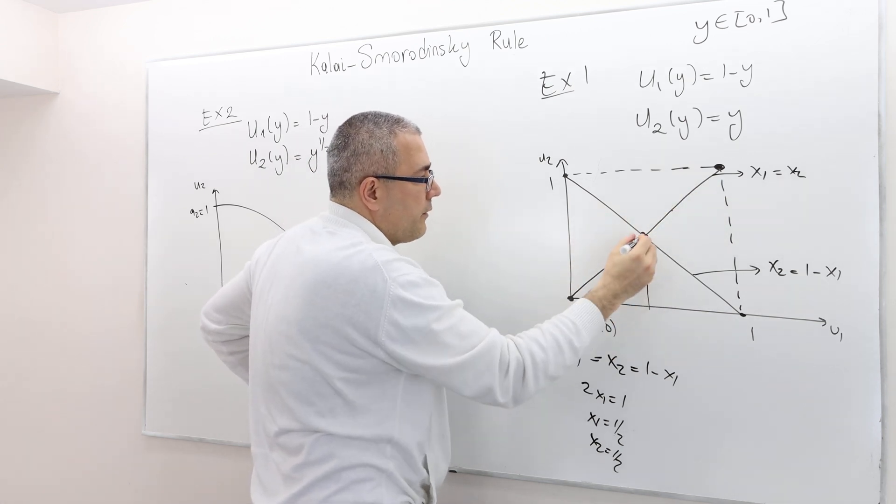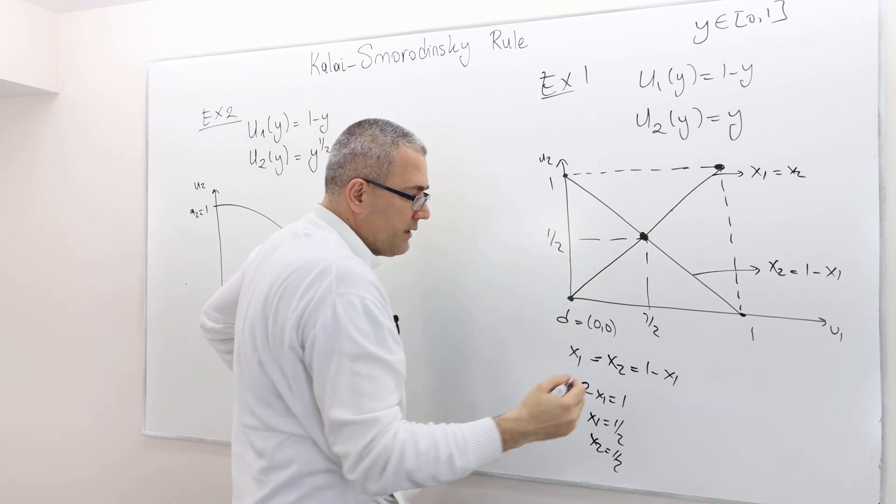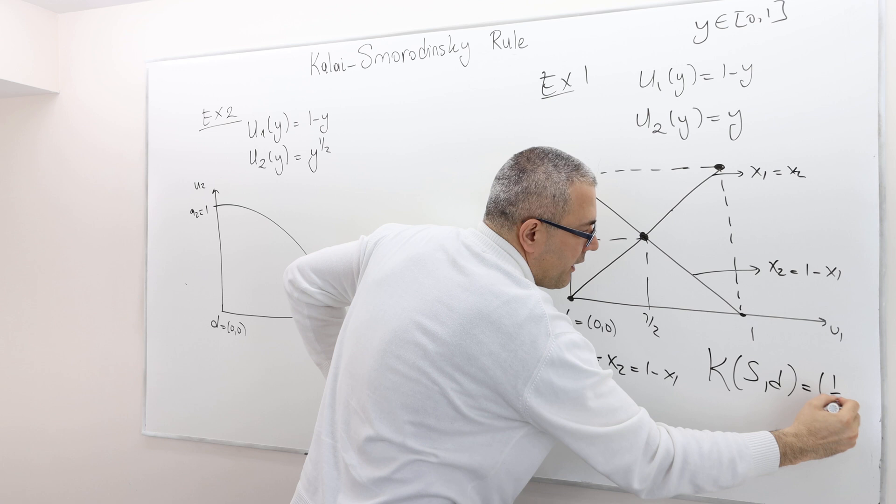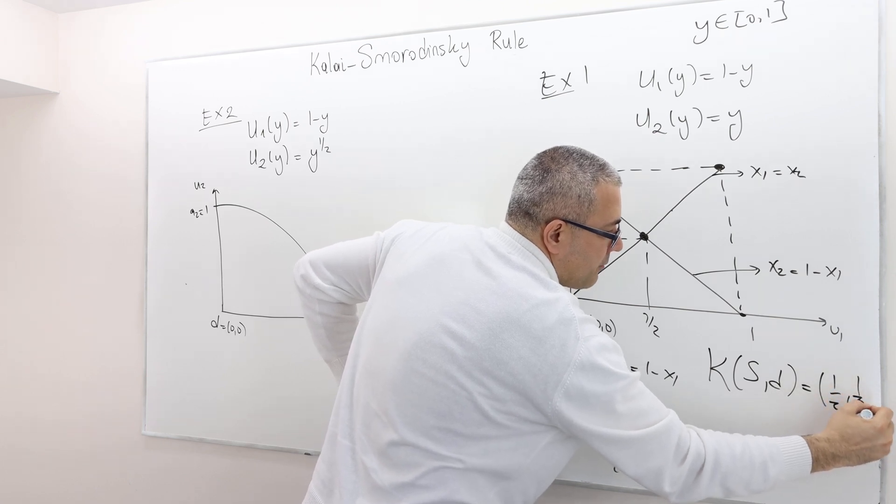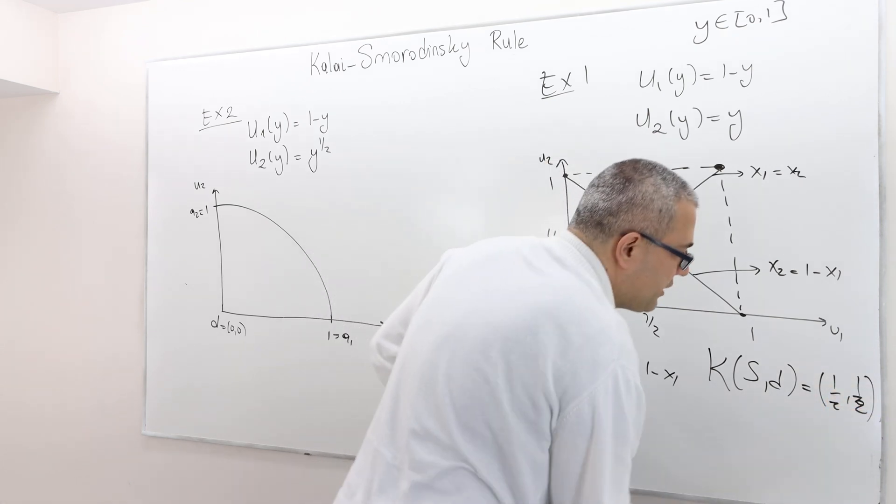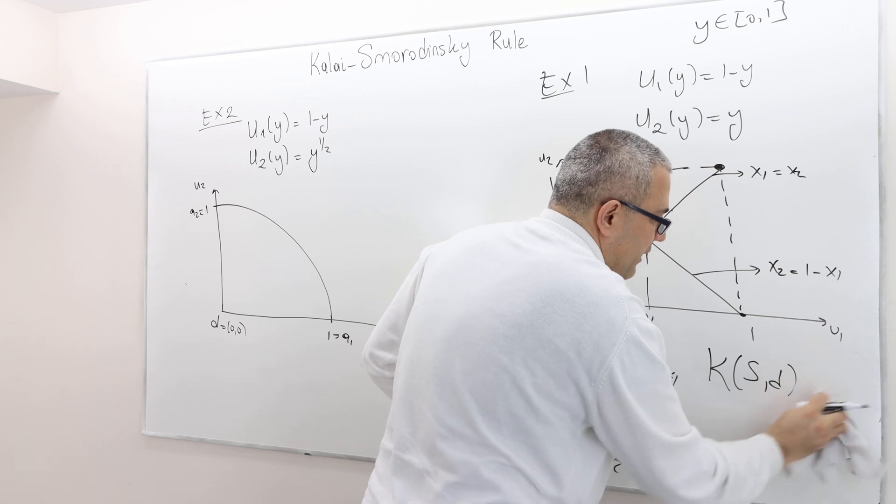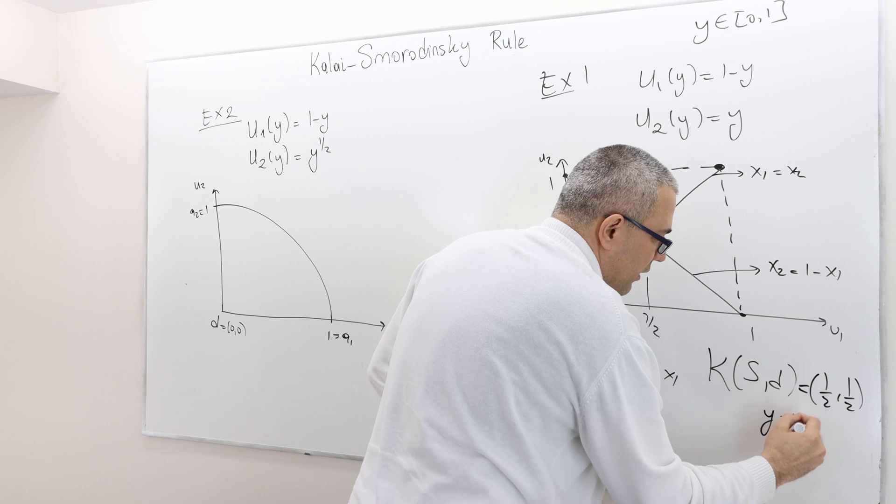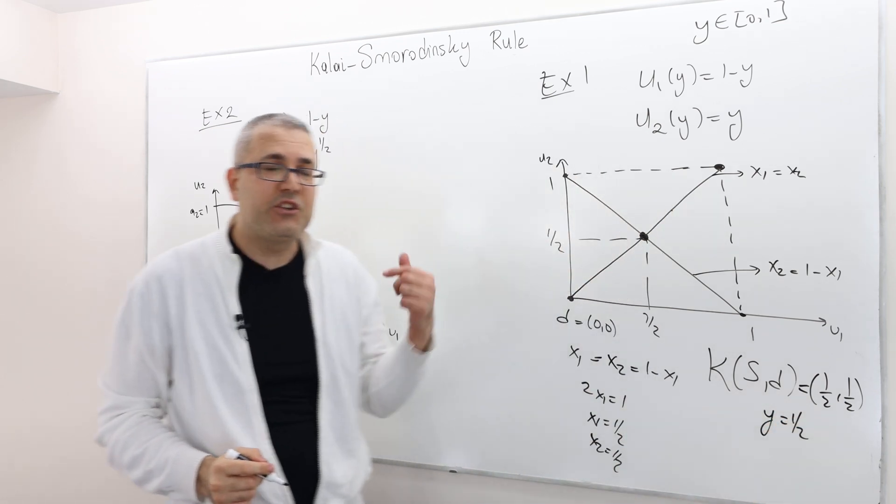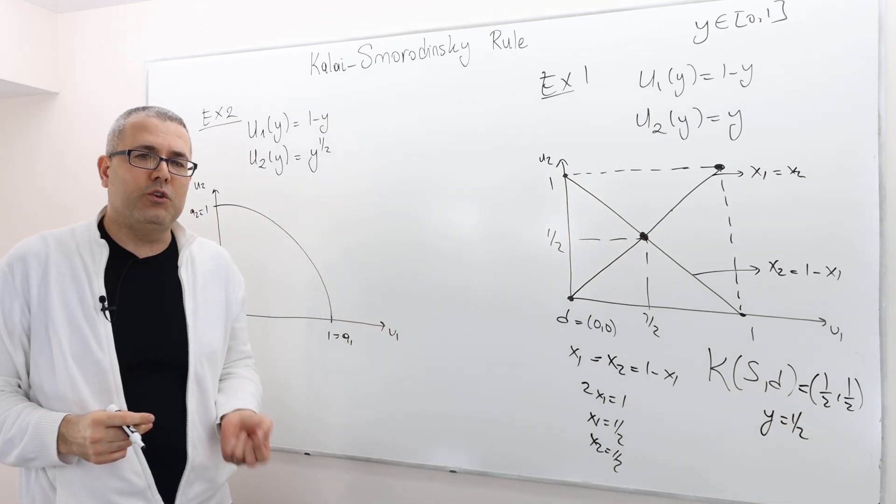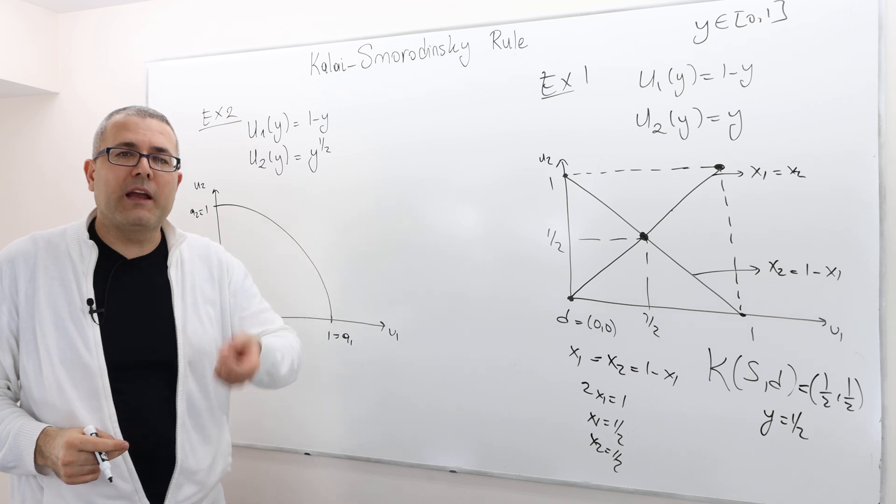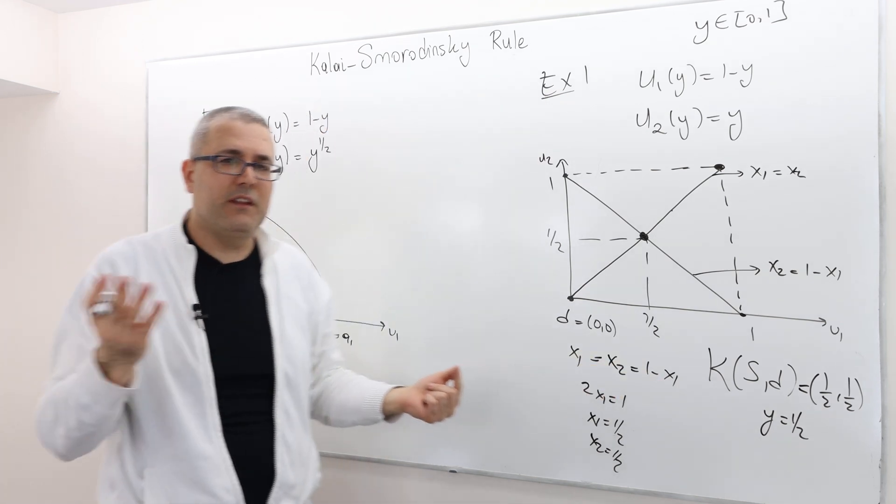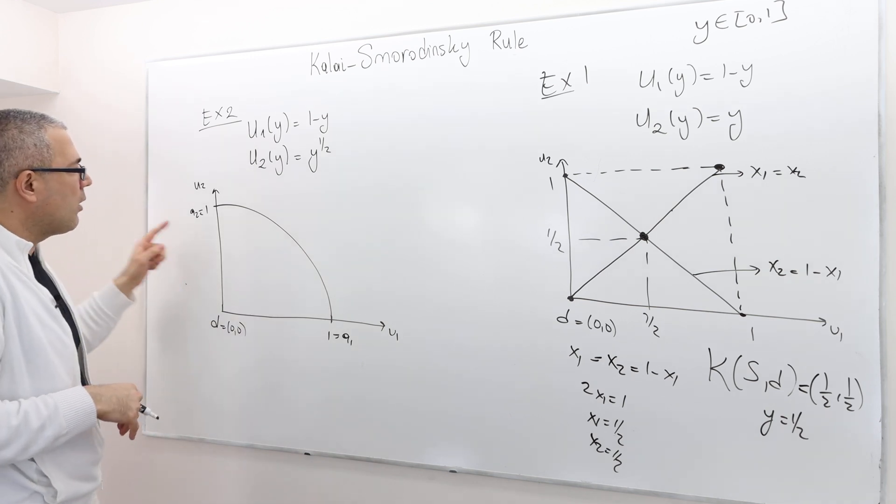So therefore, according to Kalai-Smorodinsky, KSD is going to be 1 half, 1 half, which is, by the way, exactly the same solution that the Nash bargaining was proposing: 1 half, 1 half. So y is equal to 1 half. So each negotiator is going to get 1 half utility by dividing the cake equally. y equals 1 half means dividing cake or surplus equally.